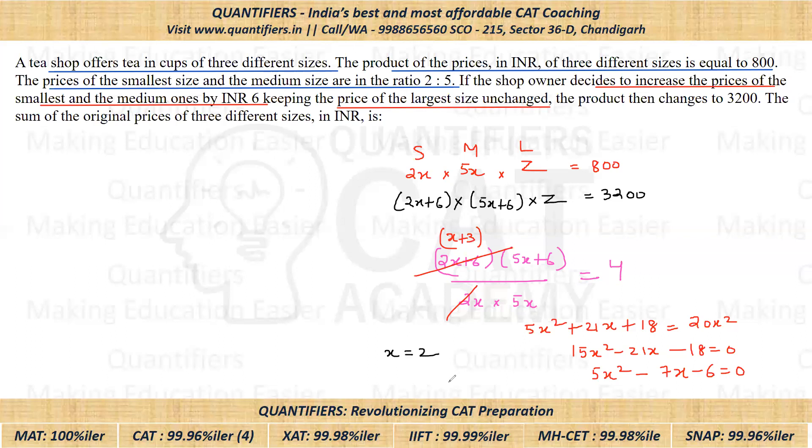Now let's see what is the question. The sum of the original prices of 3 different sizes. So if x equals 2, smallest price is 2 into 2 that is 4. Medium price 5 into 2 that is 10. And because we know that product is 800, so 4 into 10 is 40 and 40 into 20 will be 800. So the sum would be equal to 34.